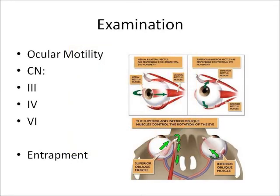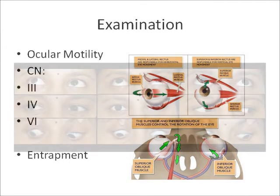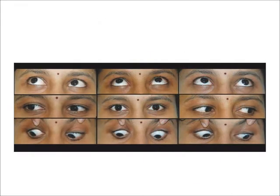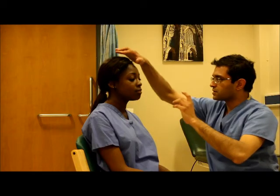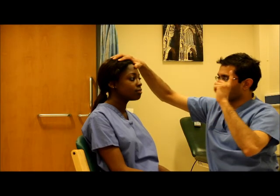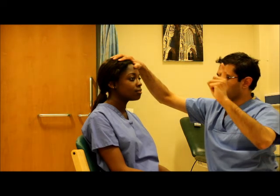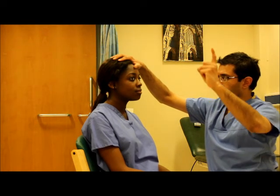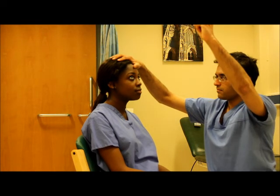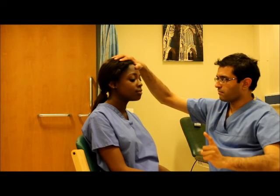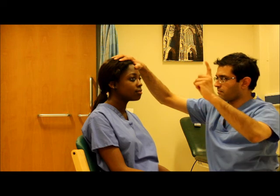Ocular motility is then examined, asking the patient to look in all 9 directions. This examination will test cranial nerves 3, 4 and 6.